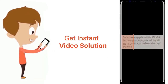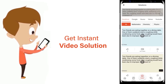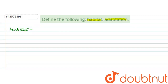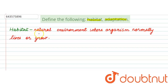Hello everyone. Here the question says: define the following — habitat and adaptation. So in this question we are supposed to define these two terms. The first one is habitat and the second one is adaptation. Now let's start with the definitions.